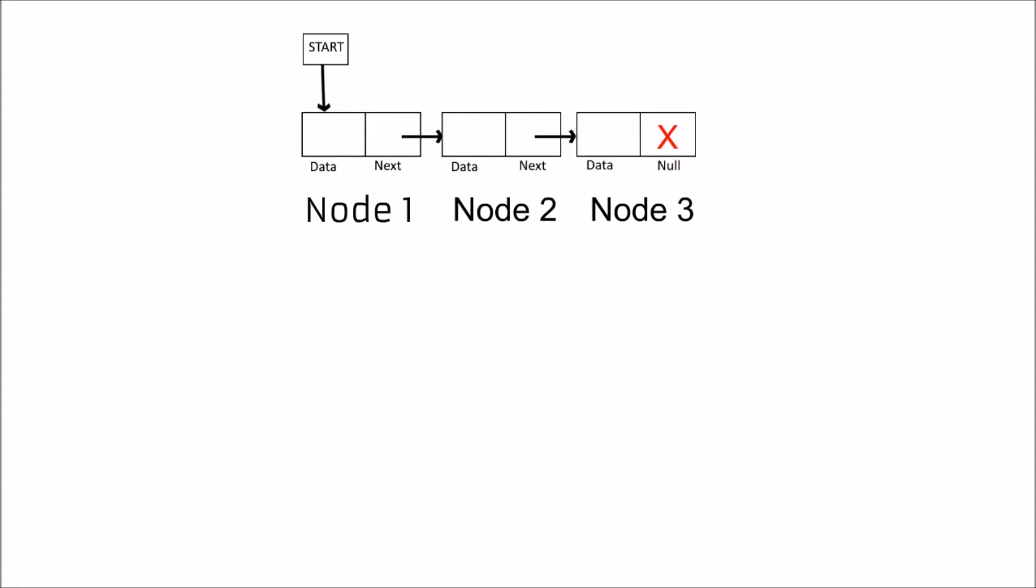Now we need to print the number of nodes present in this linked list. You can see that the number of nodes present is equal to 3. That means the algorithm we write should have a number printed as 3.